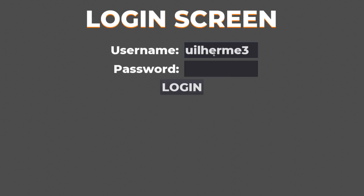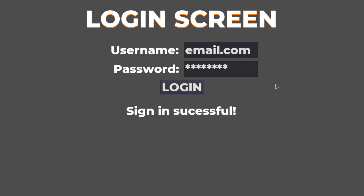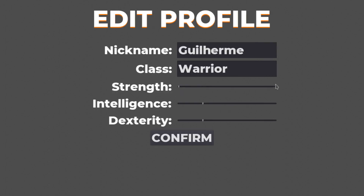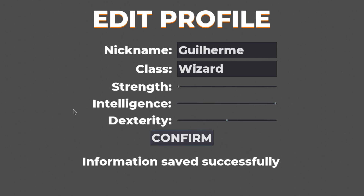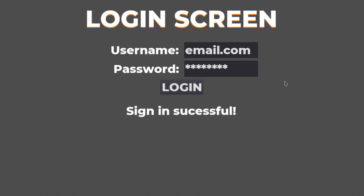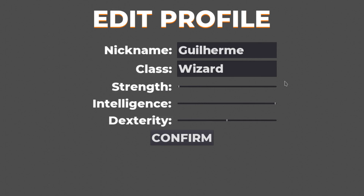This is a demo running, and if I log into an account, you can see that right after we sign in successfully we are going to go to the Edit Profile screen, and then all my information is going to be loaded from the database. You can see that currently my nickname is Guilherme and I am a mage. Let's change this, increase my intelligence to X30, click on confirm, and now my information has been saved. If I log in once again, you can see that my information has been loaded successfully, and it is the one that I updated previously.